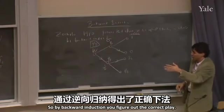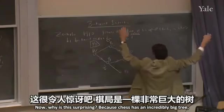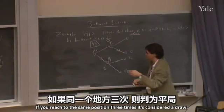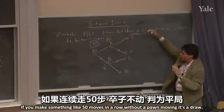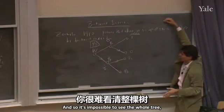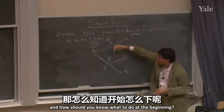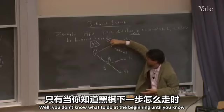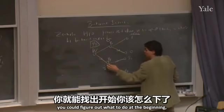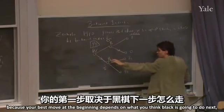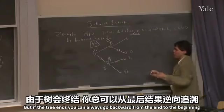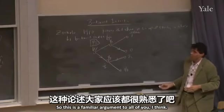By backward induction you figure out the correct play. Why is this surprising? Because chess has an incredibly big tree — not infinite, since there are rules that keep it finite, like if you reach the same position three times it's a draw, or fifty moves without a pawn moving. But the tree is finite and it's impossible to see the whole thing. Your best move at the beginning depends on what black is going to do, which depends on what you're going to do after that, and so on. But if the tree ends you can always go backwards from the end to the beginning.